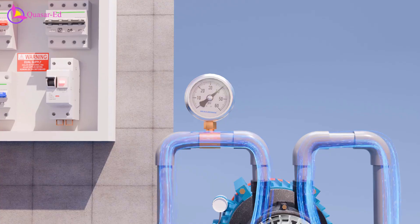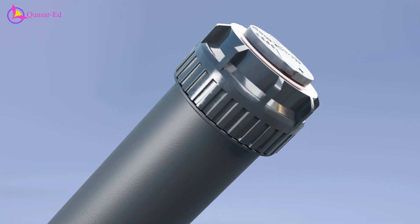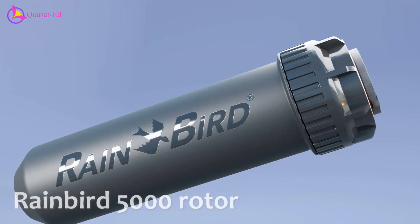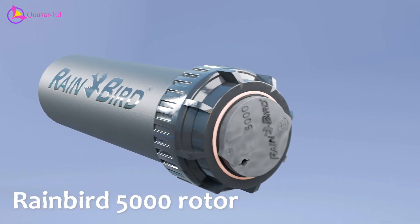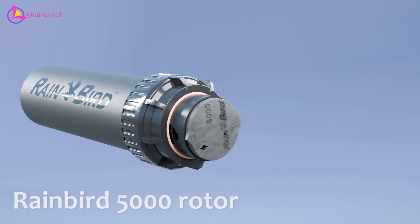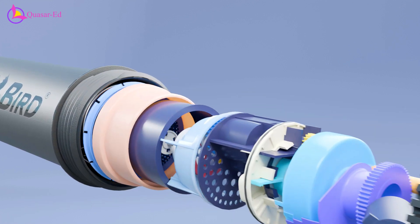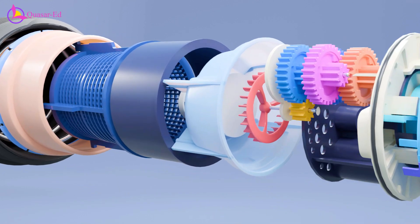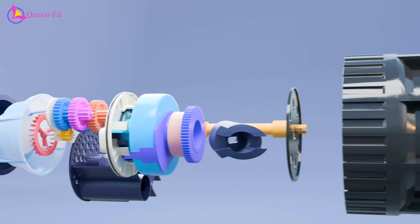Let's explore how it works. In this video, we are going to use the Rainbird 5000 rotor to explore the inner workings, but other brands might still use the same principles with slightly different variations.